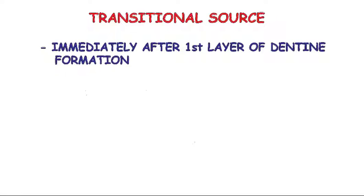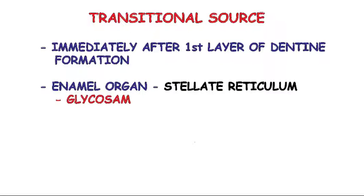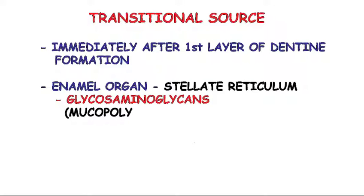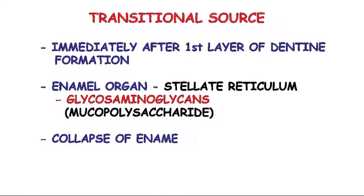The transitional source is a temporary source of nutrition which is seen immediately after the first layer of dentine is formed. At this time the nutrition source from the dental papilla is cut off and the dental sac is far from the ameloblasts to derive any nutrition. So during this time the ameloblasts derive their nutrition from the enamel organ, from the glycosaminoglycans which are present in the intercellular space between the stellate reticulum cells. They are also secreted by the stellate reticulum cells.